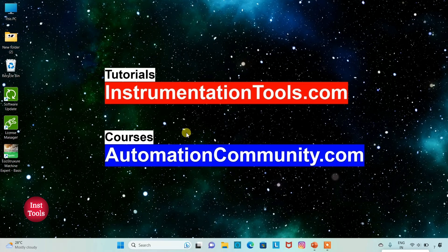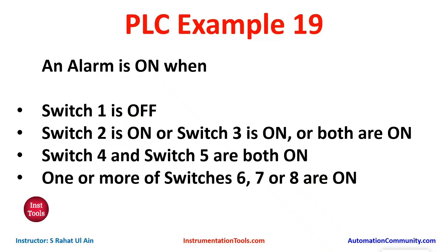Let's look at the example first. Example 19: An alarm is on when switch one is off, switch two is on or switch three is on or both are on, switch four and switch five are both on, and one or more of switches six, seven, or eight are on.